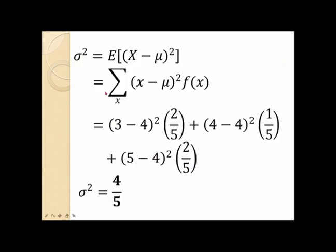After computing the mean, we can now calculate the variance. Since the random variable X is discrete, we use this formula: sigma squared is equal to the summation over X of (X minus mu) quantity squared times F of X. Here, three, four, and five are the individual values of X, mu is the computed mean, and F of X is the individual probability value corresponding to each value of X. The variance is found to be equal to four-fifths.